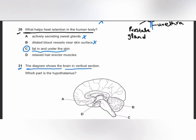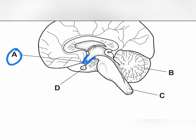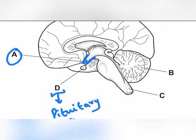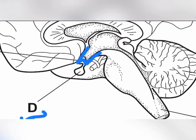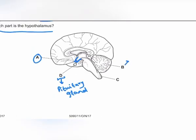MCQ number 21: which part is the hypothalamus? Just above the pituitary gland (the P-shaped gland at the base) is a flap-like structure known as the hypothalamus. B is the cerebellum and C is the spinal cord. D is the pituitary gland. The hypothalamus is the flap-like structure just above the pituitary gland.